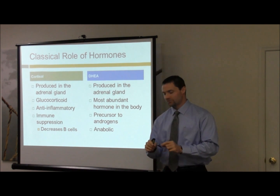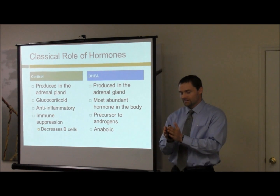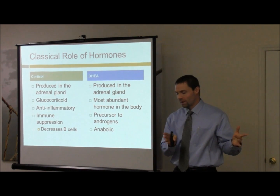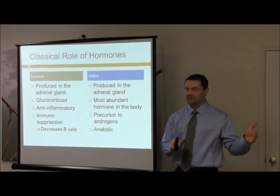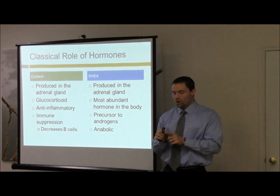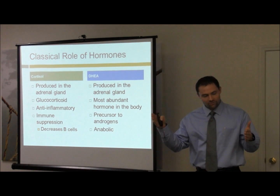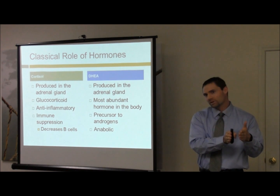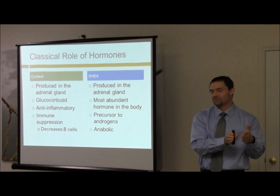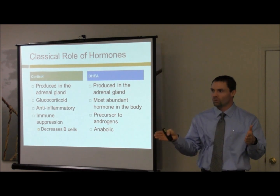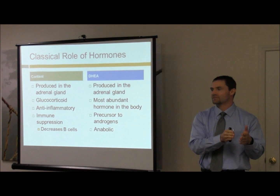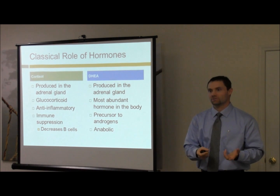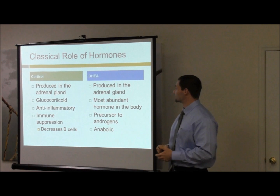Think about it like this: if you've got a continuum, normal is right in the middle. Over here is Addison's disease, and over here is Cushing's disease. To get from normal over to Addison's — what if I fall right here and don't quite fall into the range of diagnosed Addison's? Am I normal? No, I'm not normal. I still have a state of dysfunction. That's the reason we can't just go based on traditional diagnostic thresholds — there's a state of dysfunction that comes along with these.